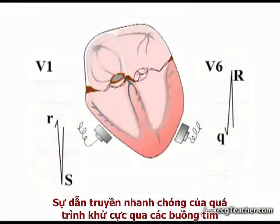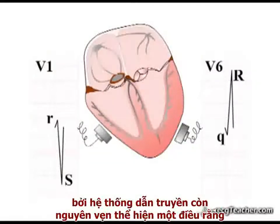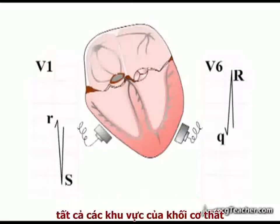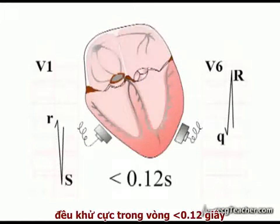The rapid conduction of depolarisation around the chambers by an intact conducting system means that all regions of the ventricular myocardium are depolarised within 0.12 seconds.